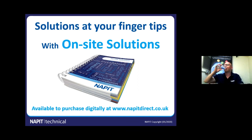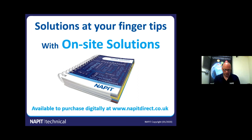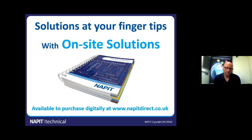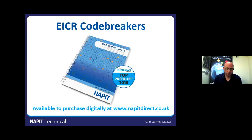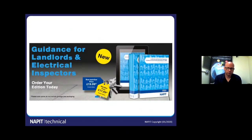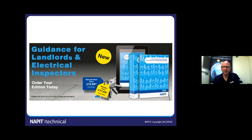We're posting documents out now, so everything's back up and running. The new PRS book is going out, which gives inspection and test guidance in the private rented sector. Code breakers are going out the door, we've got On-Site Solutions, and we've got another one coming out shortly. So yeah, flowing out — great stuff.